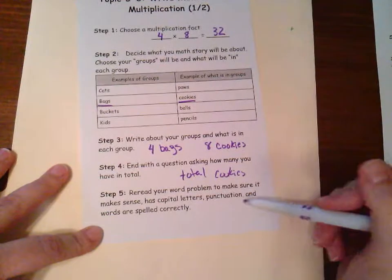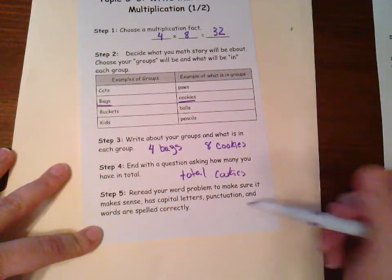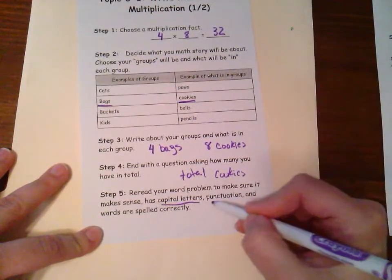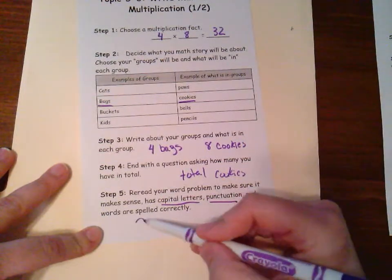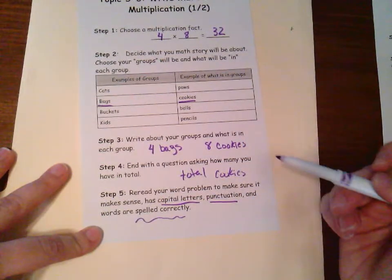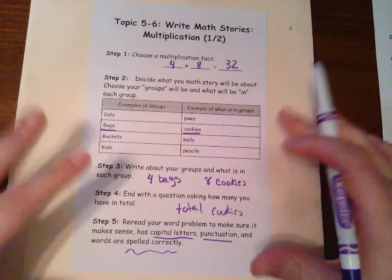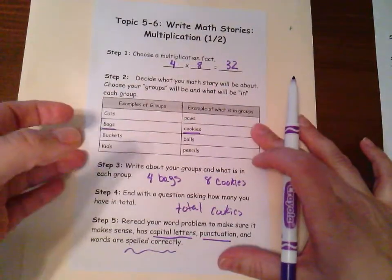Step five, always reread your word problem to make sure it makes sense that you have your capital letters, there's punctuation, and all the words are spelled correctly. So now that we've gone through our steps, let's actually go through and write a multiplication word problem.